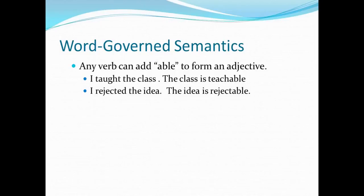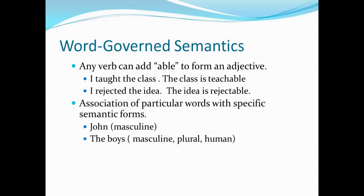Word-governed semantics: can morphology help us learn semantics? For example, any verb can often add '-able' to form an adjective — 'I taught the class, the class is teachable; I rejected the idea, the idea is rejectable.' There's something very regular there. When you have regularity like that, you can build seed linguistic rules and run machine learning. Also, associating words with semantic features — knowing that John is masculine, that boys are masculine, plural, and human — helps with the semantics surrounding entities.